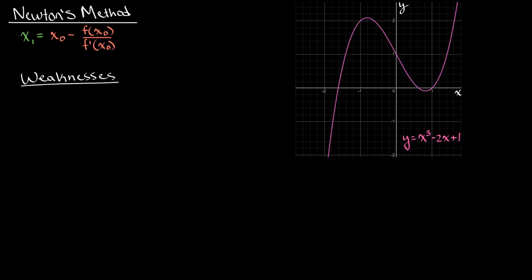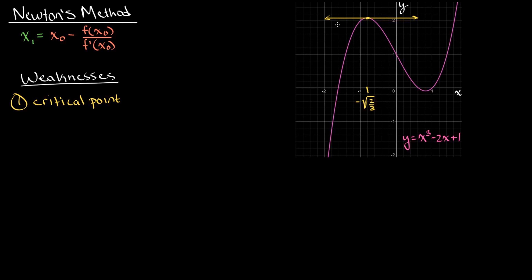One weakness we saw in the last video is when our initial guess is at a critical point. We had the function y = x³ − 2x + 1, and when we let our initial guess equal negative square root of 2/3, Newton's method makes a tangent line and finds its x-intercept. But when we make a tangent line at a critical point — like a local maximum — we get a horizontal tangent line that never crosses the x-axis. That's why Newton's method fails there.